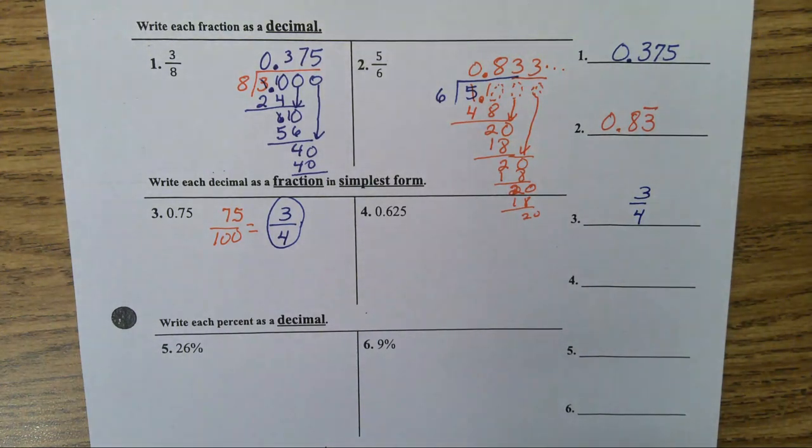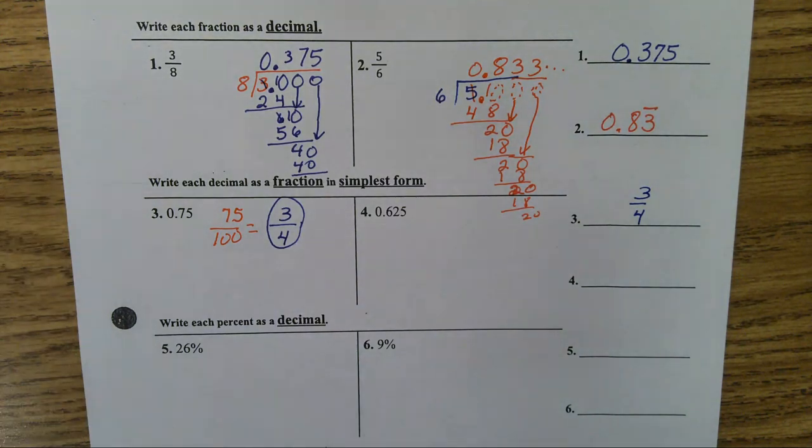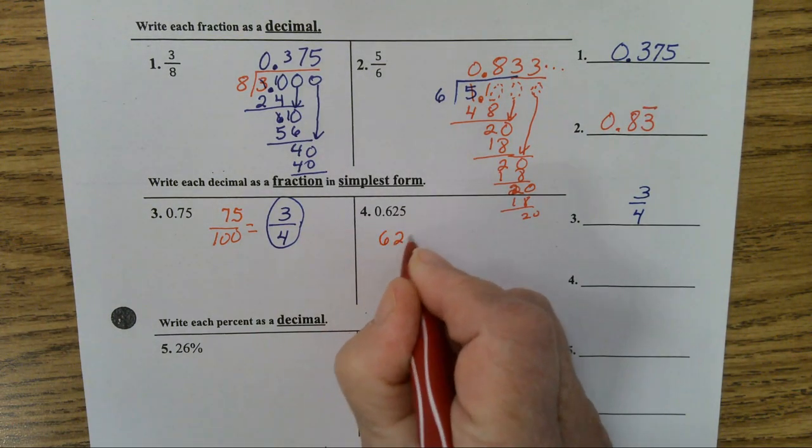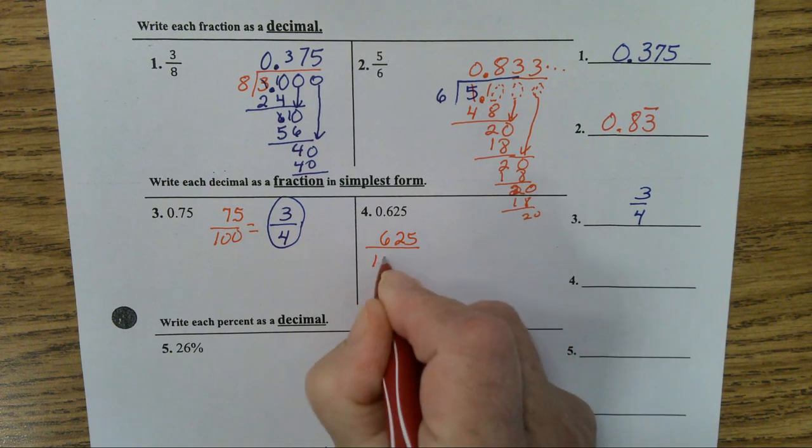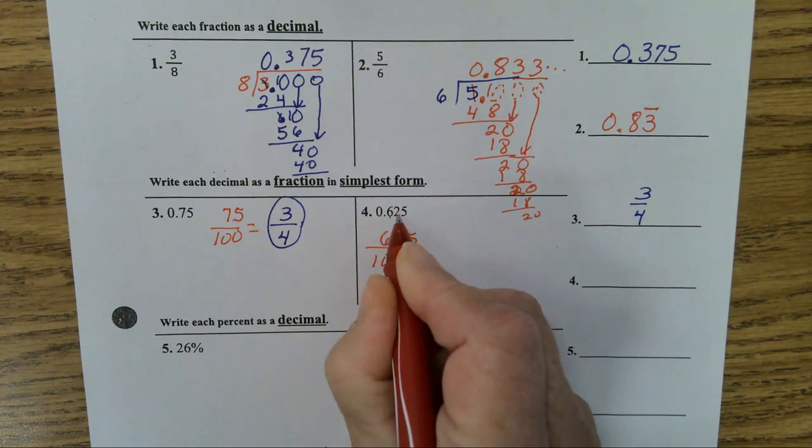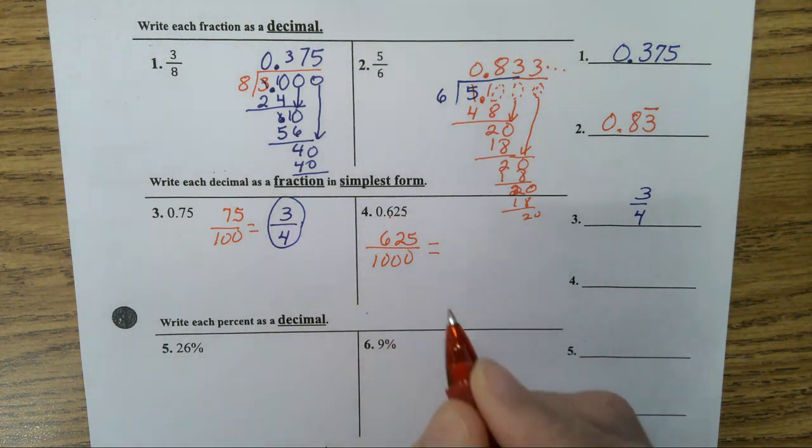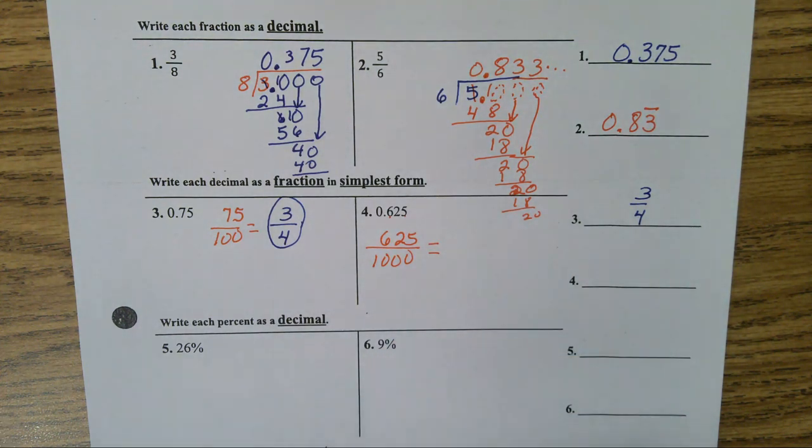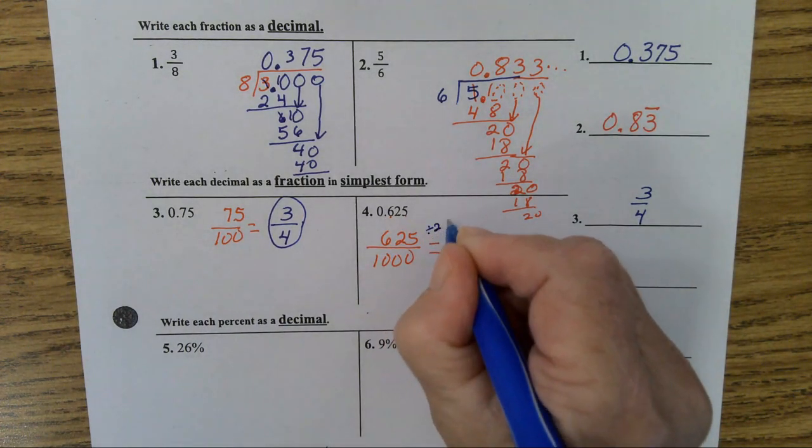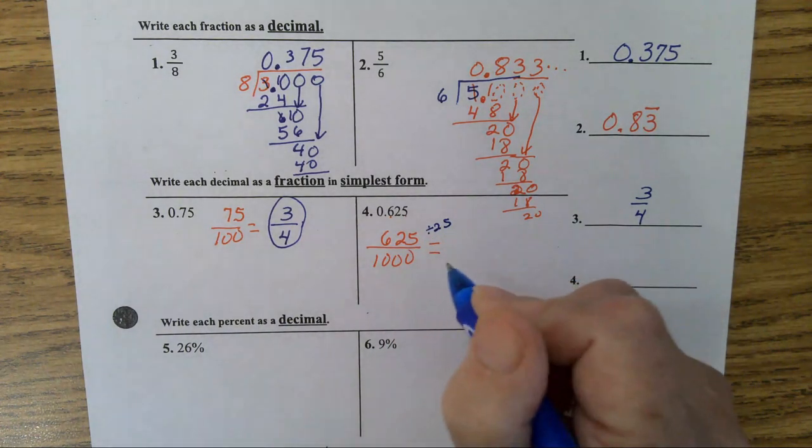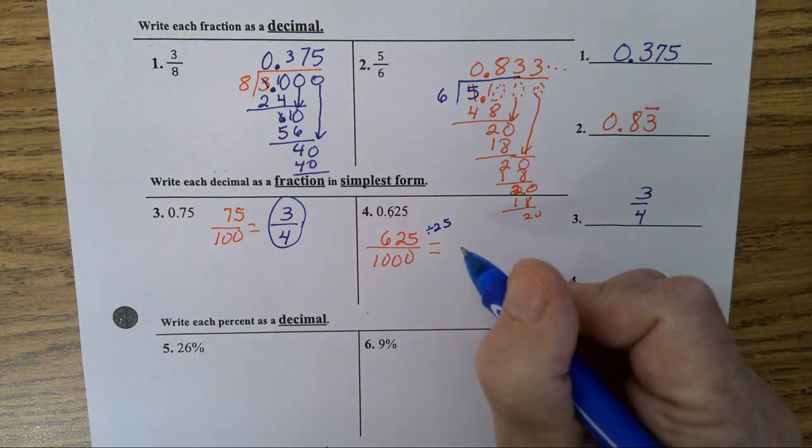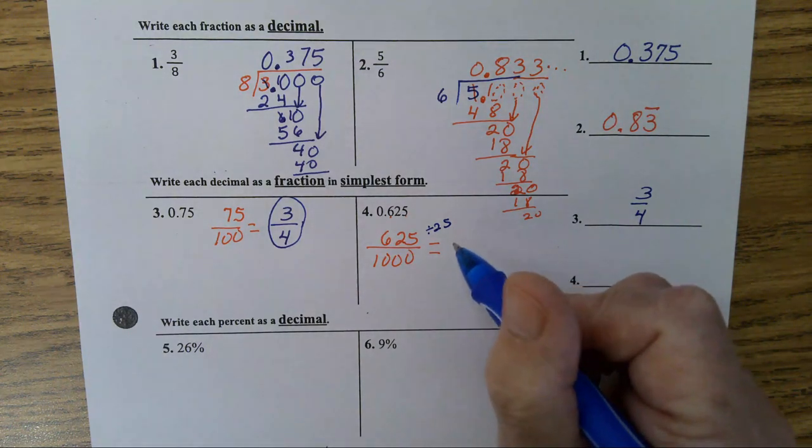Okay. The next problem. What am I going to put 625 on top of? A thousand. A thousand. Very good. Tenths, hundredths, thousandths. Now, what will divide 625 and a thousand? Twenty-five. How many 25s are in 625?